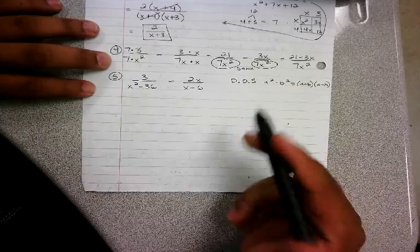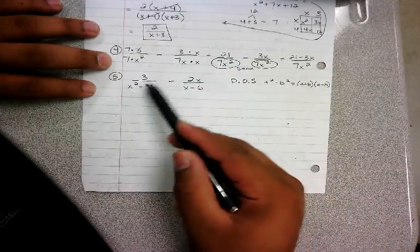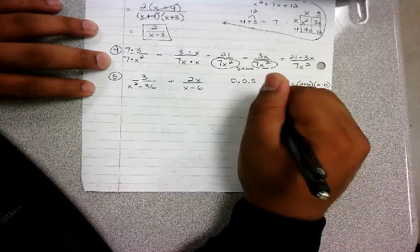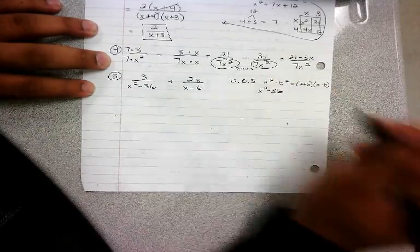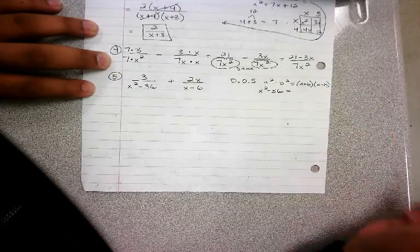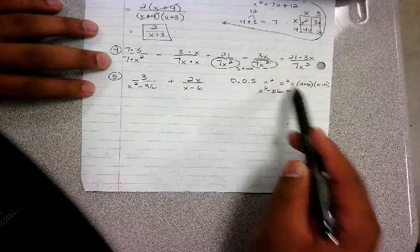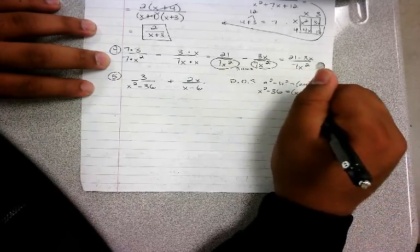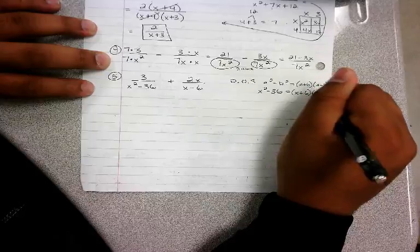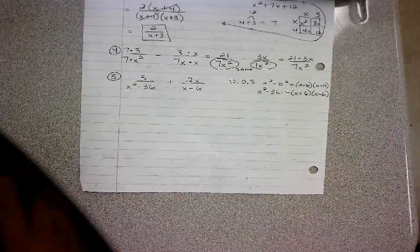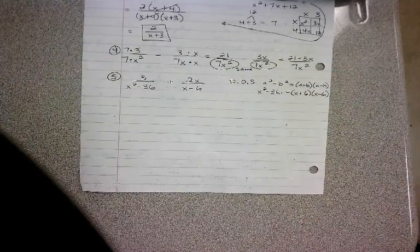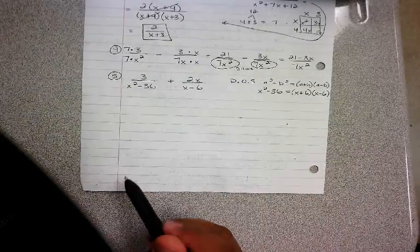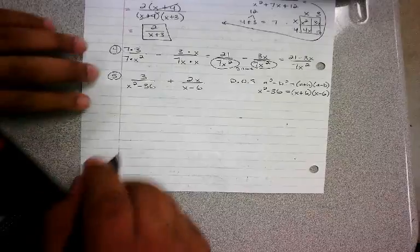I gotta use the difference of the squares. I have x squared minus 36, so that equals - the square root of 36 is 6 - so you have x plus 6 and x minus 6. That's for this right here, so I'm going to rewrite my expression.